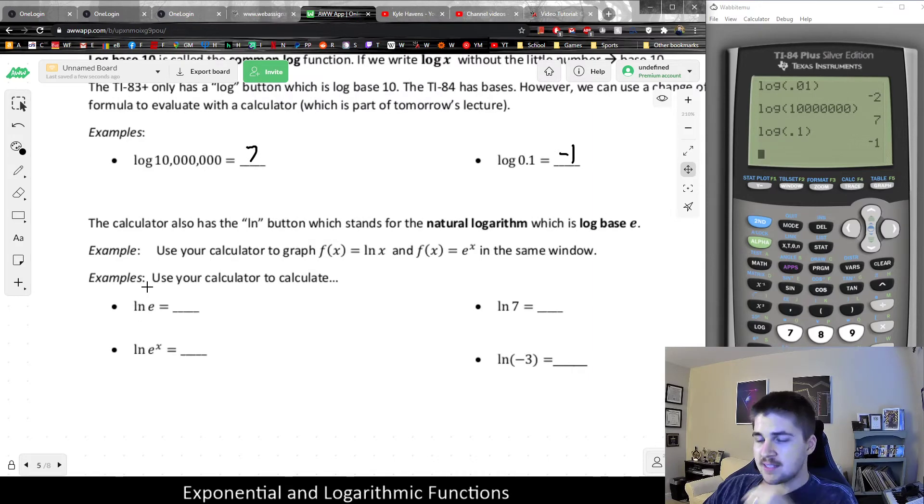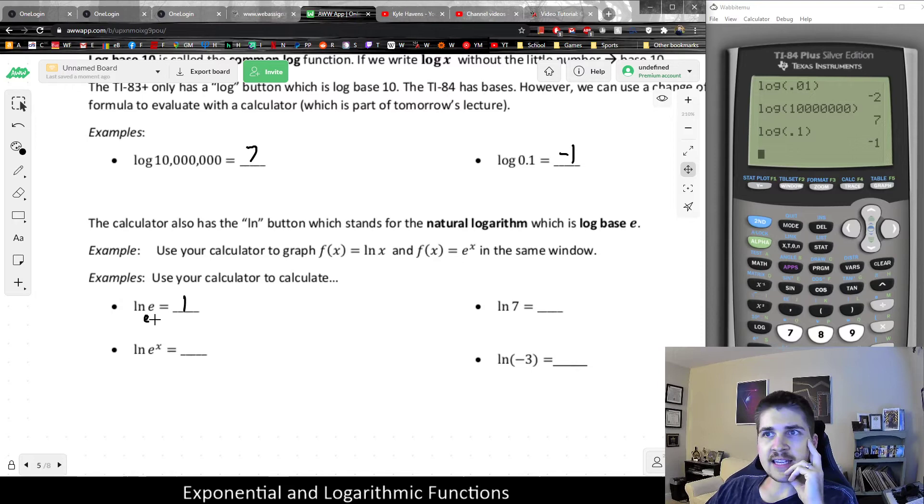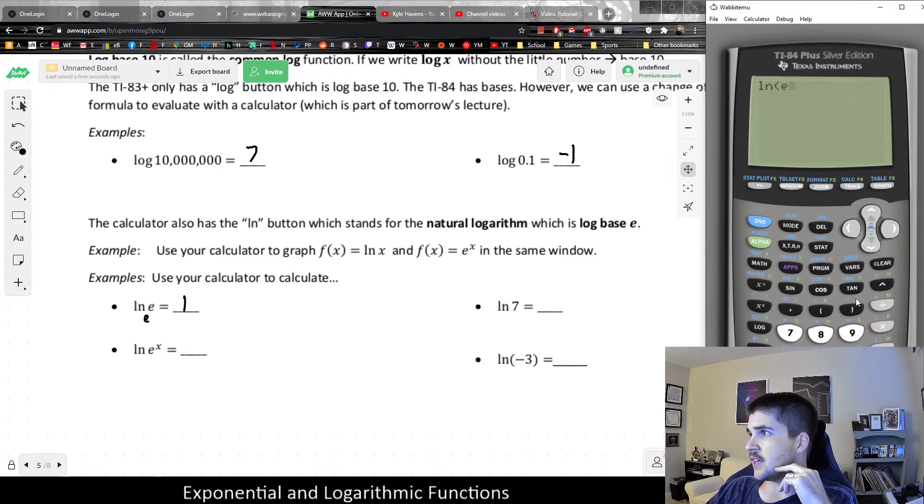So let's say I wanted to know what's the ln of e. In this case, this would be equivalent to log base e. You could pretend that there's a base e right in there. And of course, when it's a match in the base, it's always going to be 1 because e to the first power makes e. I could use my calculator, just use the ln function right there. ln of e is going to be 1.